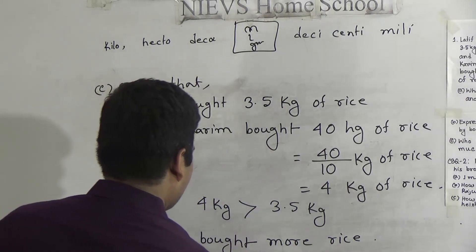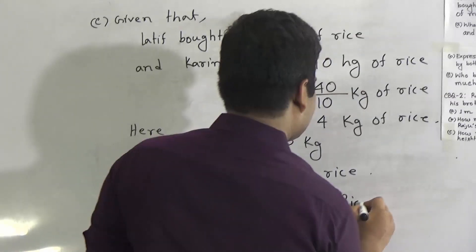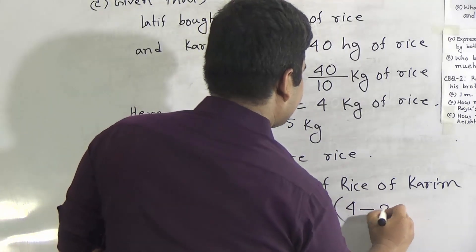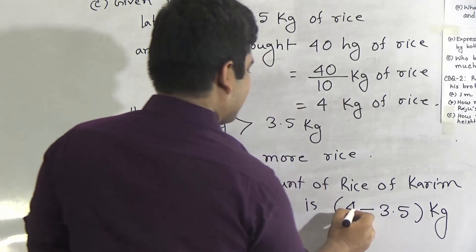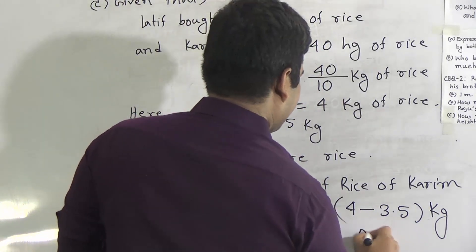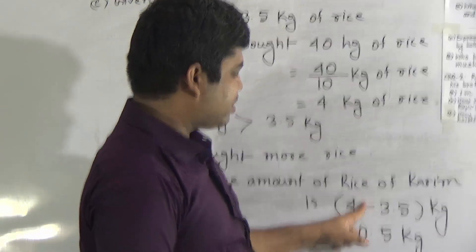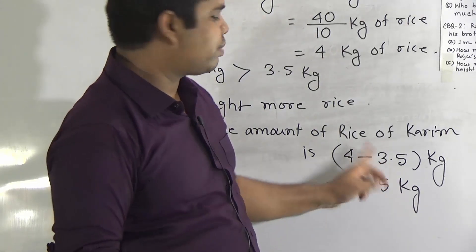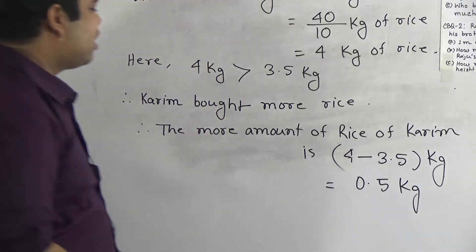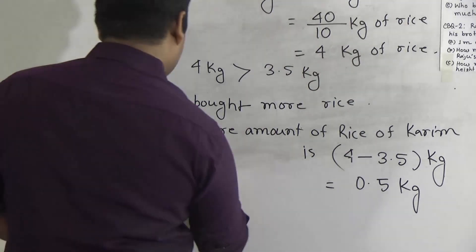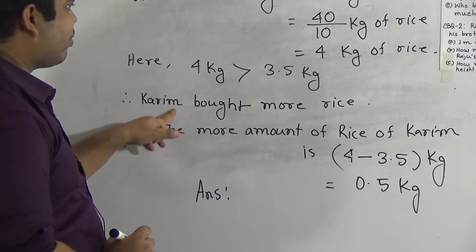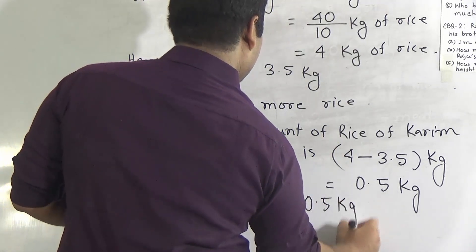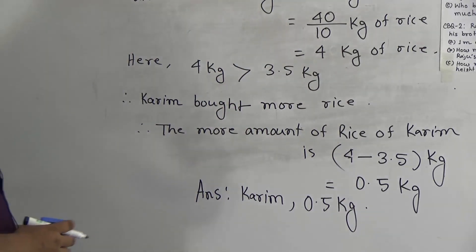The more amount of rice that Korim bought is found by subtraction: 4 minus 3.5 kg. Notice: 4.0 minus 3.5 — from 0 we borrow, making 10 minus 5 equals 5, carry 1, then 4 minus 4 equals 0. So 0.5 kg is the extra amount of rice Korim bought. There are two answers: Korim bought more rice, and the difference is 0.5 kg. This is the solution of question number 1.